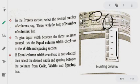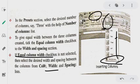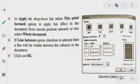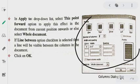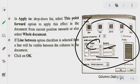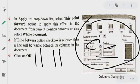By default, you have 1, 2, 3, 4, left and right column options. If you want to create two columns, click on two. We can create three equal columns by selecting equal column width. If we want to change them, we will go to More Columns option, where we can set the width and spacing for each column.